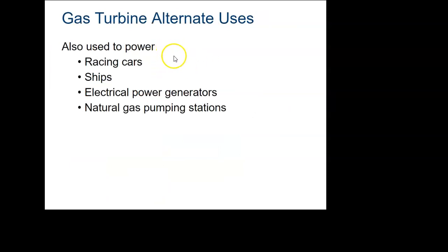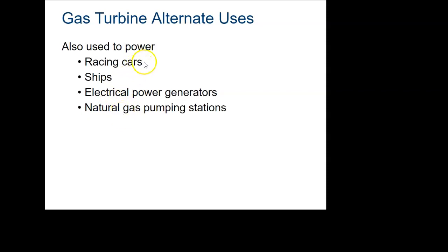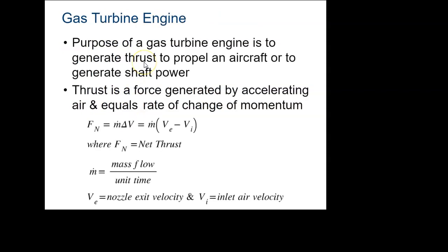Some alternate uses of gas turbines: power generators, ships — many use jet engines for power, though some use reciprocating diesel engines. They're also used to pump natural gas and even power a few race cars.